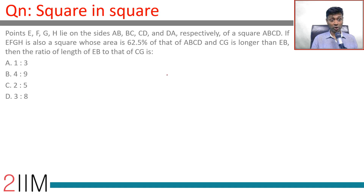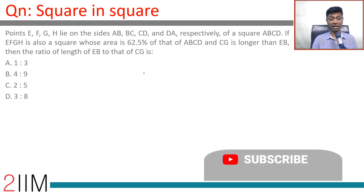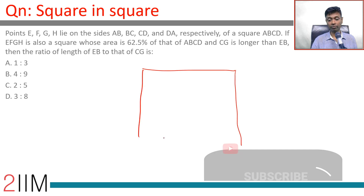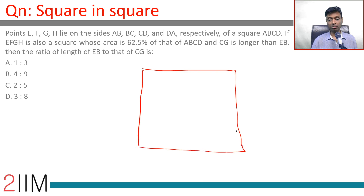A wonderful question: points E, F, G, and H lie on the sides of AB, BC, CD, and DA respectively of square ABCD. I love questions involving squares — I'm going to draw square ABCD.